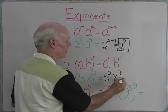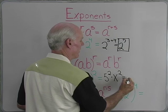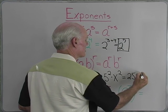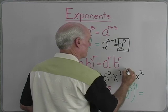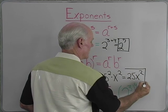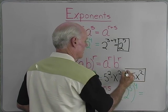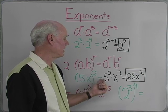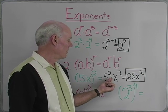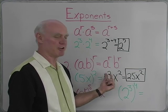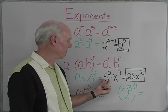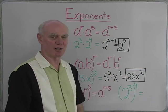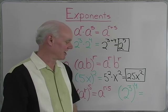So 5 to the 2nd power is 25, so that will be 25x to the 2nd. When it's a product raised to a power, it's the product of the two powers — 5 to the 2nd times x to the 2nd — that will give me 25x to the 2nd.